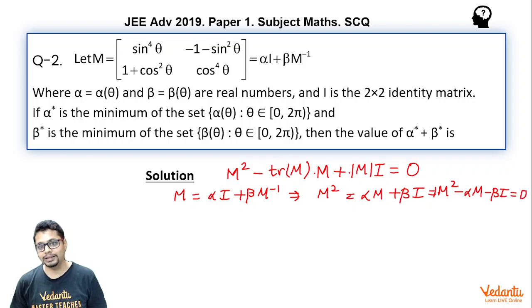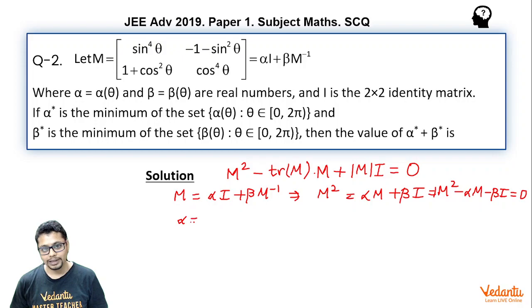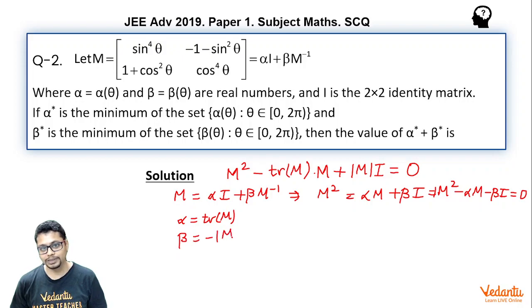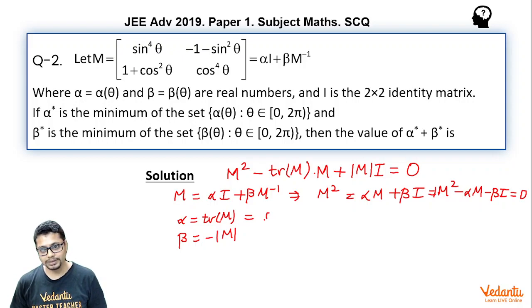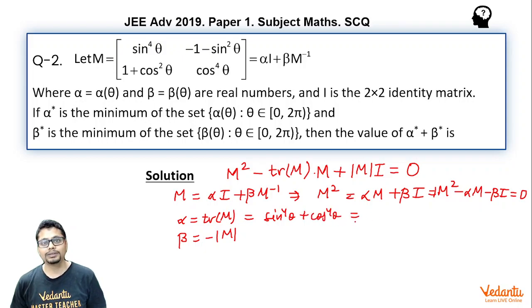Comparing with the Cayley-Hamilton equation, alpha equals trace of M and beta equals minus determinant of M. The trace of M is the sum of the diagonal elements, which is sin⁴θ plus cos⁴θ. This can be written as (sin²θ + cos²θ)² minus 2·sin²θ·cos²θ, which simplifies to 1 minus 2·sin²θ·cos²θ.